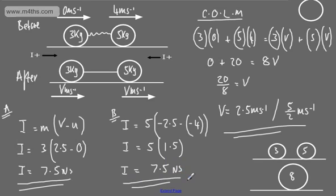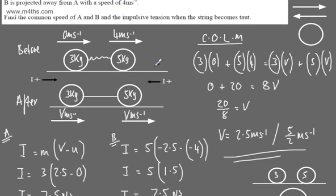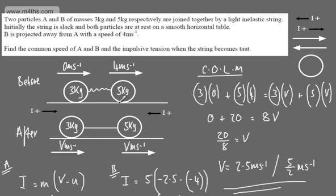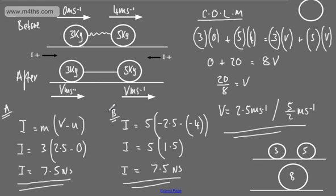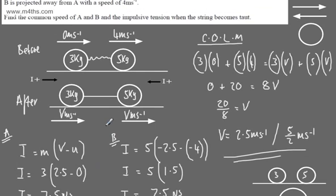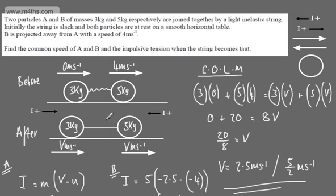You could have worked that out as a negative quantity depending on your sign convention — the key point is the impulsive tension has the same magnitude from both particles. So those are three basic exam-style questions looking at impulse, momentum, and the conservation of linear momentum.